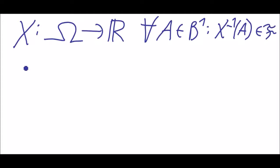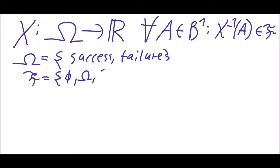This is a random variable. In our case we had omega is success and failure, F is empty set, omega, and success and failure.